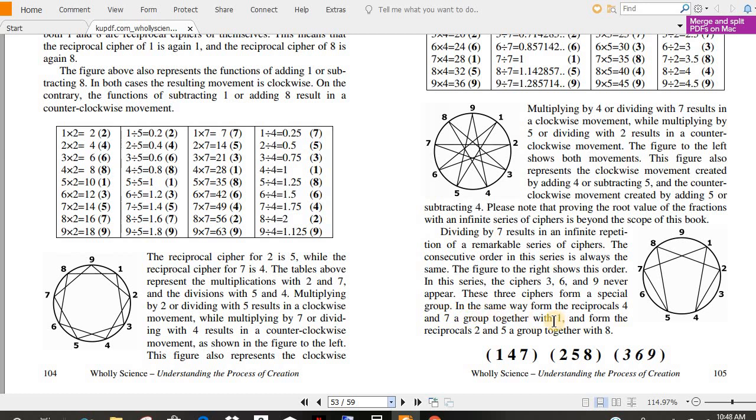These three ciphers form a special group. In the same way, form the reciprocals four and seven, a group together with one, and form the reciprocals two and five, a group together with eight. So, one, four, seven, two, five, eight, three, six, nine.